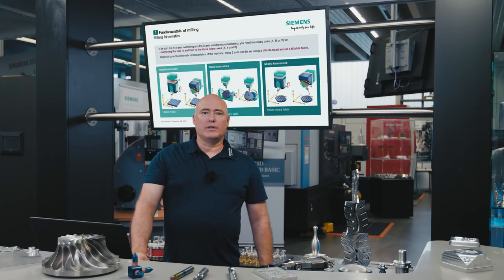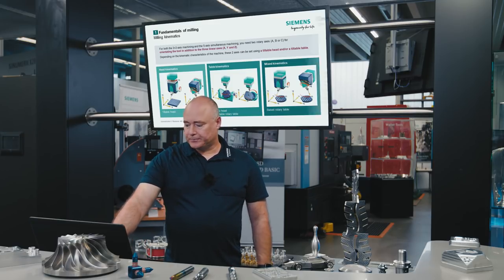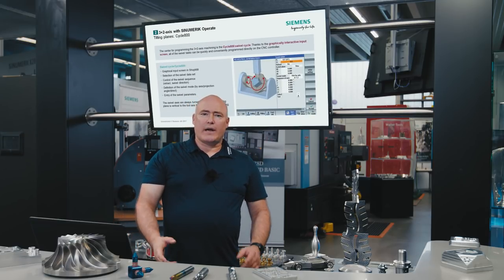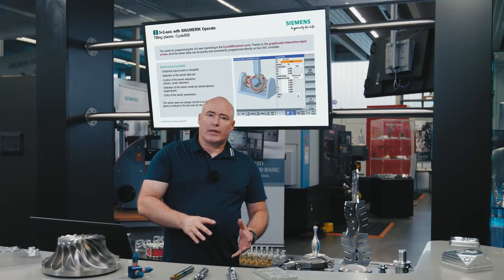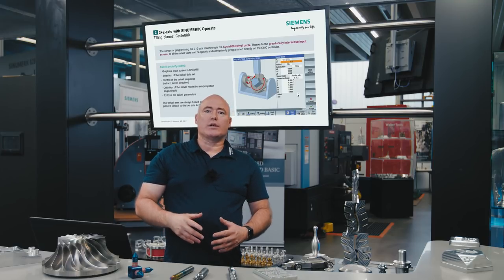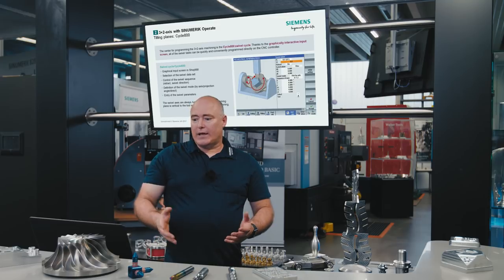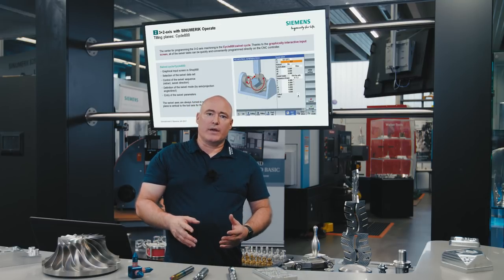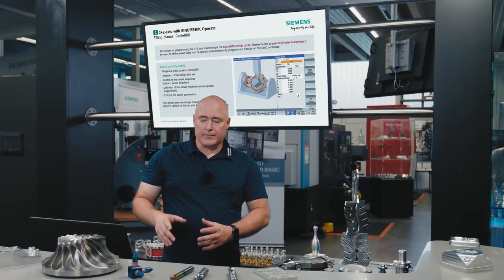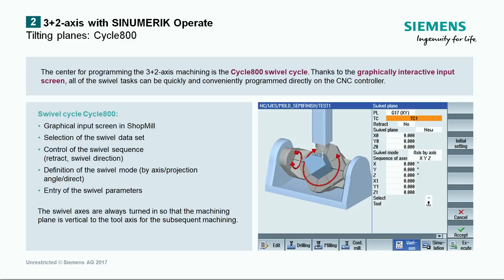Now let's move from the machine kinematics to the control. With three-plus-two axis machining, the machining plane is set statically by the swivelling function. The swivel cycle in CINEMERIC is called Cycle 800. Without the swivel cycle, it would be difficult to envision the planes, because the swivel cycle automatically takes care of the swivelling and calculating. It means that all the technologies used in three-axis machining can also be used in the swivelled plane.